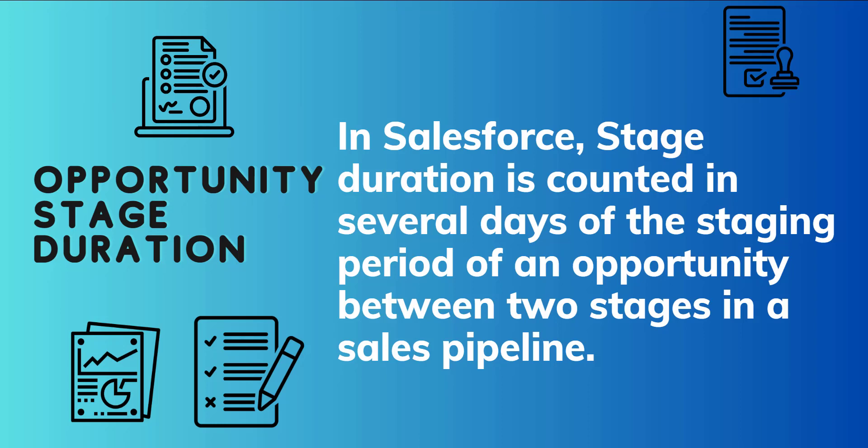The opportunity stage duration report is a custom report created with data from opportunity history. This report shows the record of durations of the opportunity stages in number of days. You can also view the average stage duration and the sum of all stage durations. With the help of this report it is easy to understand how long a sales representative is taking to progress through sales stages.